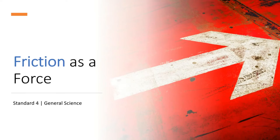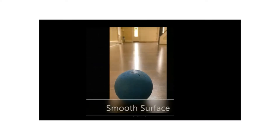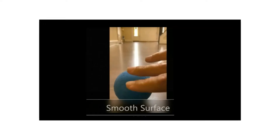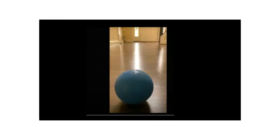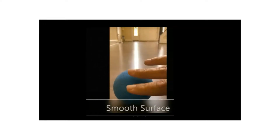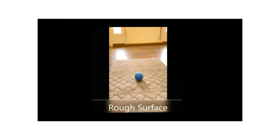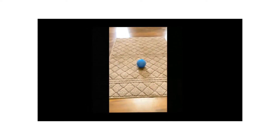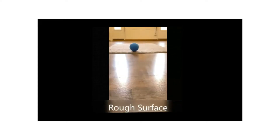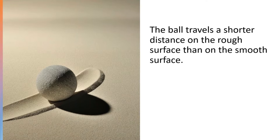Today's topic is friction as a force. Take a ball and give it a slight push to make it roll on the smooth surface of a floor. Watch how far the ball travels. Now push this ball with the same amount of force on a rough surface. The ball travels a shorter distance on the rough surface than on the smooth surface.